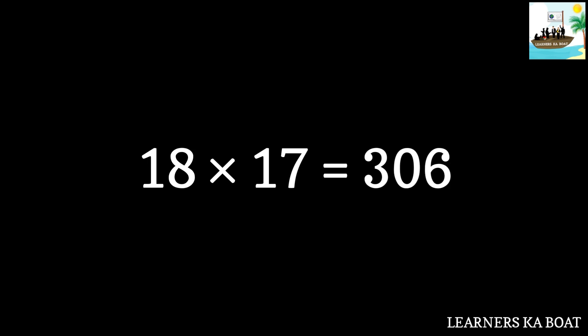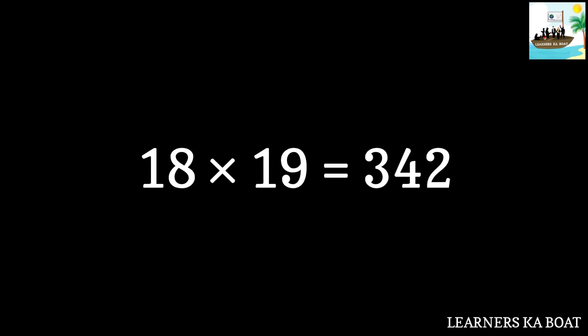18 seventeens are 306. 18×18 is 324. 18×19 is 342. 18×20 is 360.